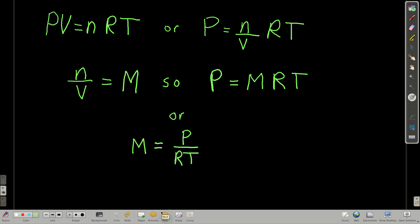So it looks like this. We're going to go way back, old school, to the ideal gas law, PV equals nRT. If we rearrange the ideal gas law a little bit, we get P equals n over V times RT.